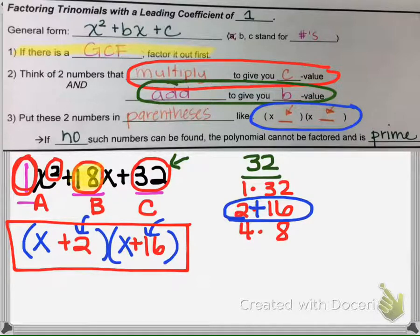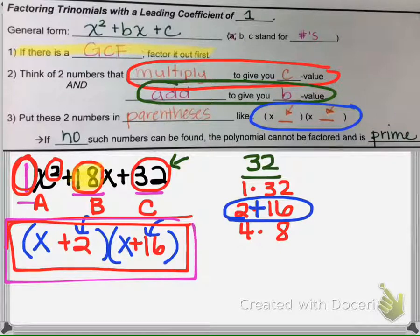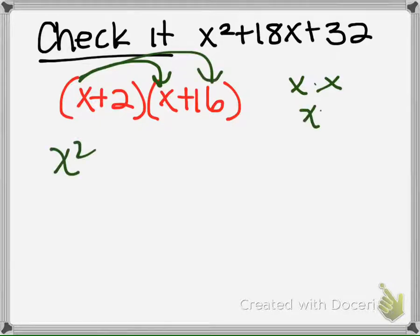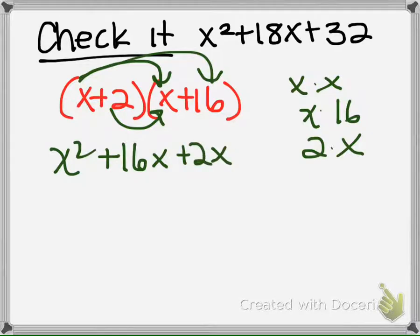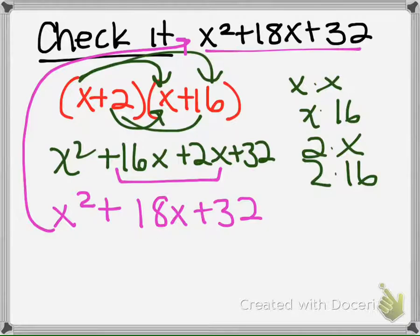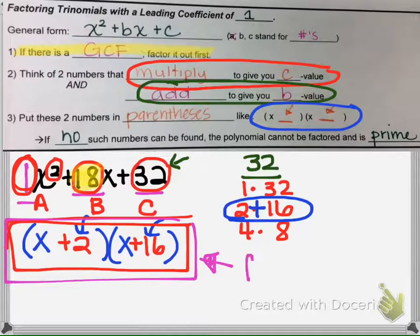Let's verify this answer by multiplying it out. X times X is X², X times 16 is 16X, 2 times X is 2X, and 2 times 16 is positive 32. Combining like terms gives us back what we started with, confirming this is the correct factored form. Remember, factoring means taking a polynomial and writing it as a product.